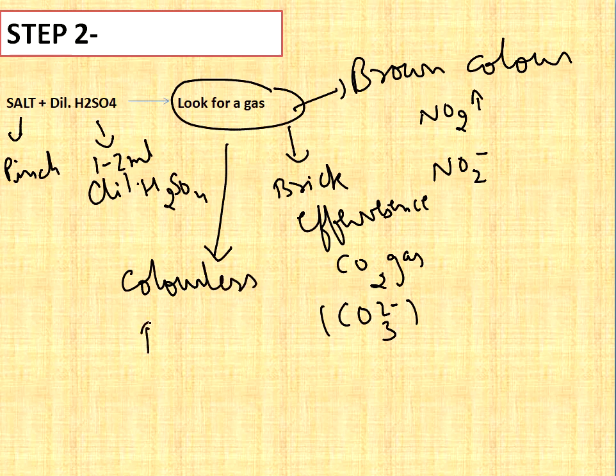Third one, if the colorless pungent gas, pungent means it will be upne wali gas, this is called pungent gas, then it will be sulfur dioxide and the anion will be sulfite, SO3 2-.